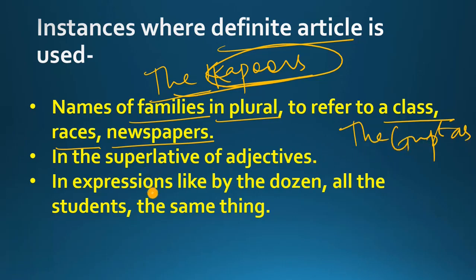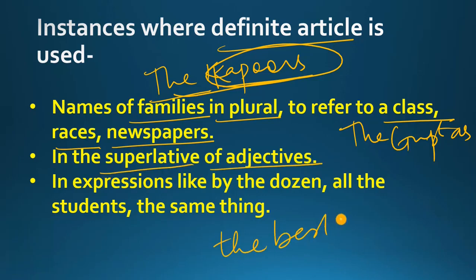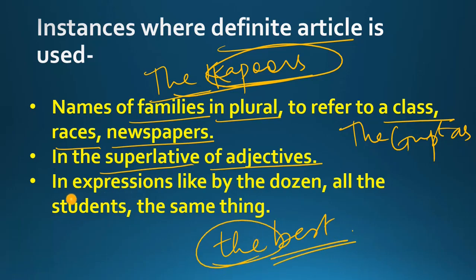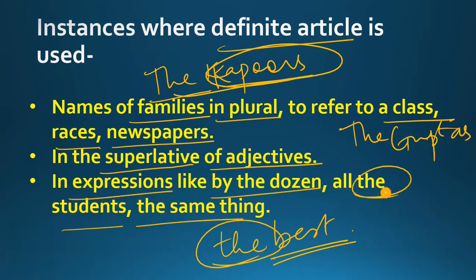Next, the definite article is used in the superlative degree of adjectives. For example, 'She is the best student in her class.' 'Best' is the superlative degree of adjective और उससे पहले हमने 'the' use किया. It is also used in expressions like 'by the dozen', 'all the students', 'the same thing' — तो इन सब expressions में भी definite article 'the' use हो रहा है.